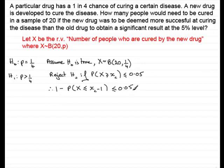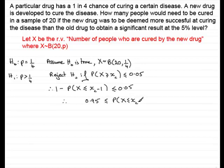Rearranging the inequality — adding the probability to both sides and subtracting 0.05 from both sides — gives 1 minus 0.05, which is 0.95, less than or equal to P(X ≤ XC − 1). Therefore P(X ≤ XC − 1) must be greater than or equal to 0.95.